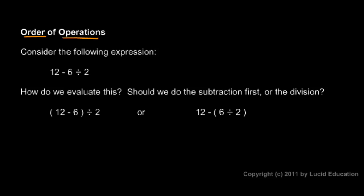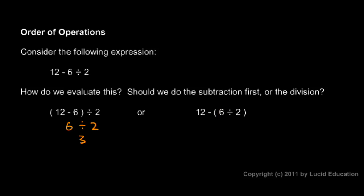There are rules about which operations should be done in which order — that's why this is called order of operations. Some operations have a higher precedence; they get done first. It makes a difference whether we do the subtraction first or the division. If we do the subtraction first, as indicated with parentheses, we get 12 minus 6, which is 6, so 6 divided by 2 equals 3. But if we do the division first, 6 divided by 2 is 3, so we have 12 minus 3, which is 9. Clearly 3 is different from 9, so it makes a difference.